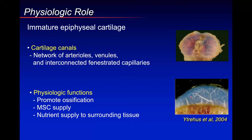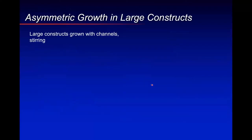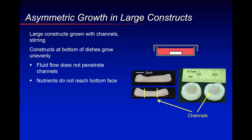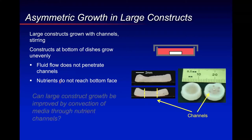We decided that for cartilage tissue engineering, we should provide nutrients in the form of canals or channels — something we could reproduce relatively simply. We decided to grow large constructs with channels and needed to figure out the amount of stirring in the bath. We normally grow our constructs by letting them sit at the bottom of a petri dish. Whether you put channels or don't, if the channels are blocked at the bottom, nutrients won't reach the interior.